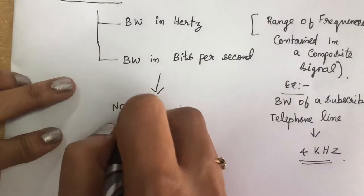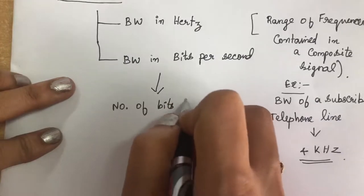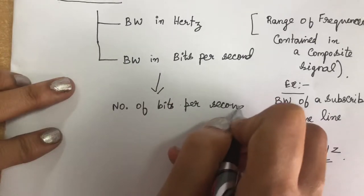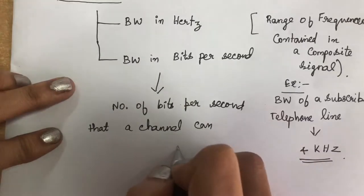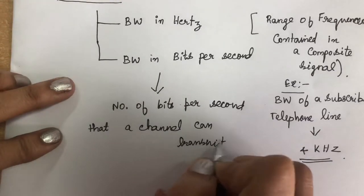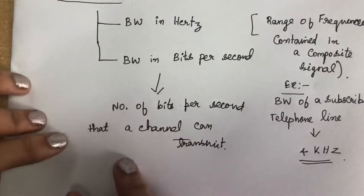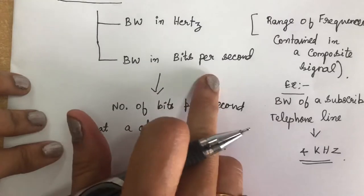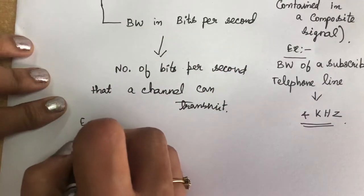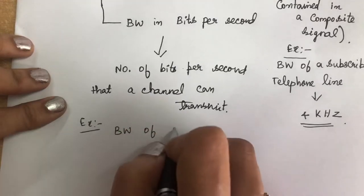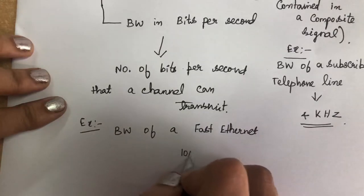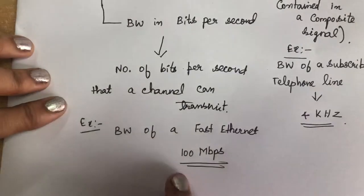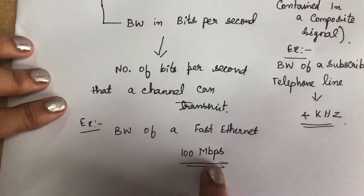We can also define bandwidth in bits per second — that is the number of bits per second that a channel can transmit. For example, the bandwidth of fast Ethernet is a maximum of 100 Mbps, meaning it can transfer 100 megabits per second through the channel.